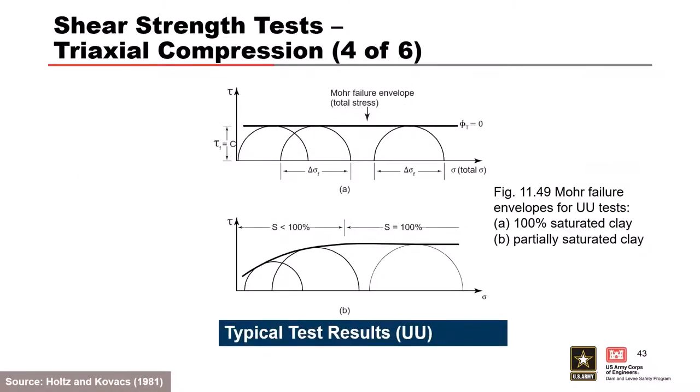Typical UU test results: because the material is unconsolidated with confining pressure, the failure envelope is essentially horizontal, giving a consistent undrained shear strength. This is used primarily for post-construction stability evaluation.